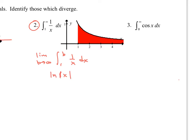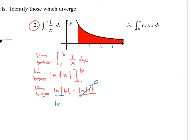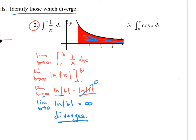Taking the antiderivative gives ln x, so we evaluate ln x from 1 to b, still carrying the limit. Plugging in the upper and lower limits: ln(1) = 0, and ln(b) as b goes to infinity is just infinity. So when this happens, we do not get a sum — there is no area value we can find because it keeps increasing forever. We say that this diverges.